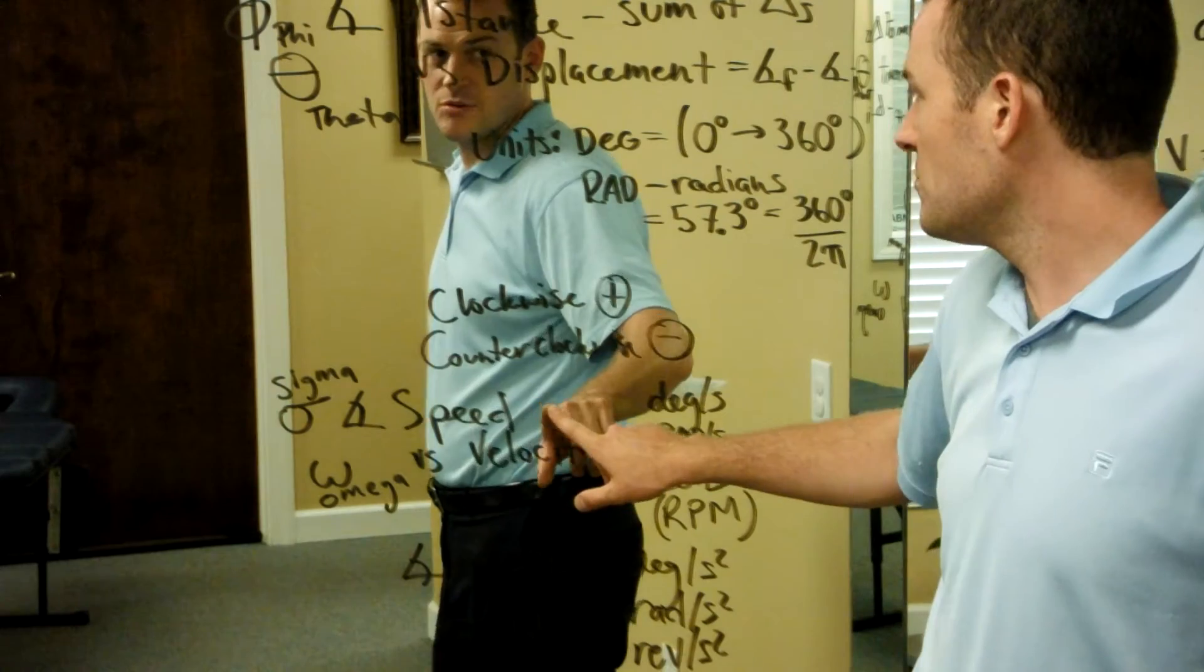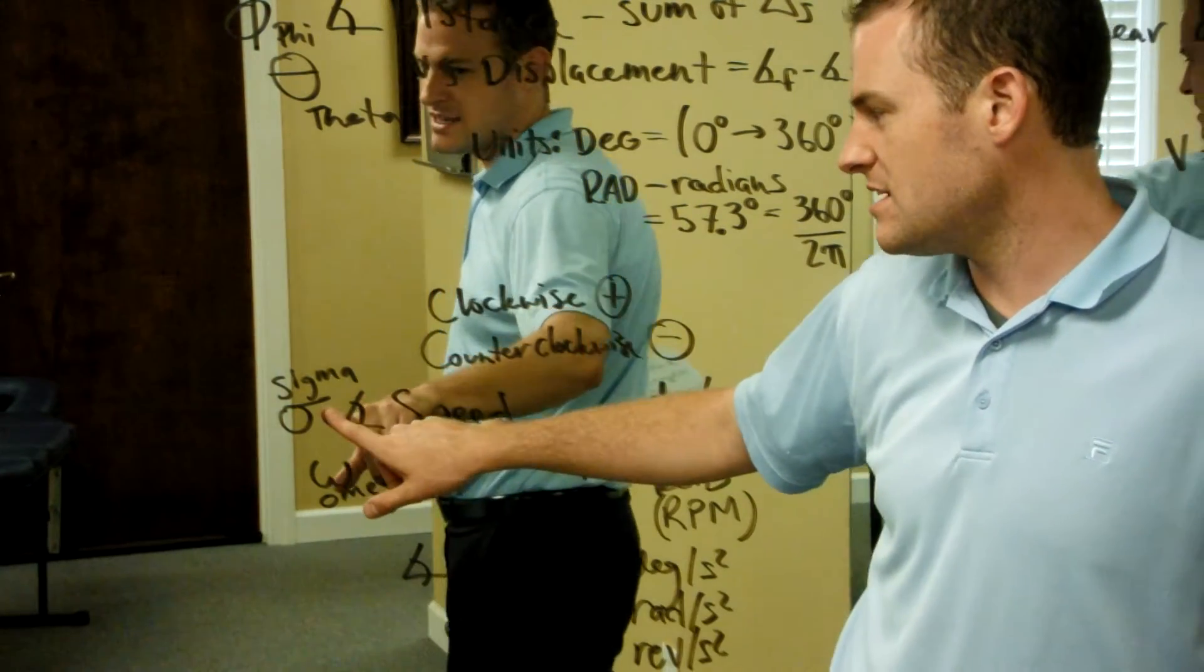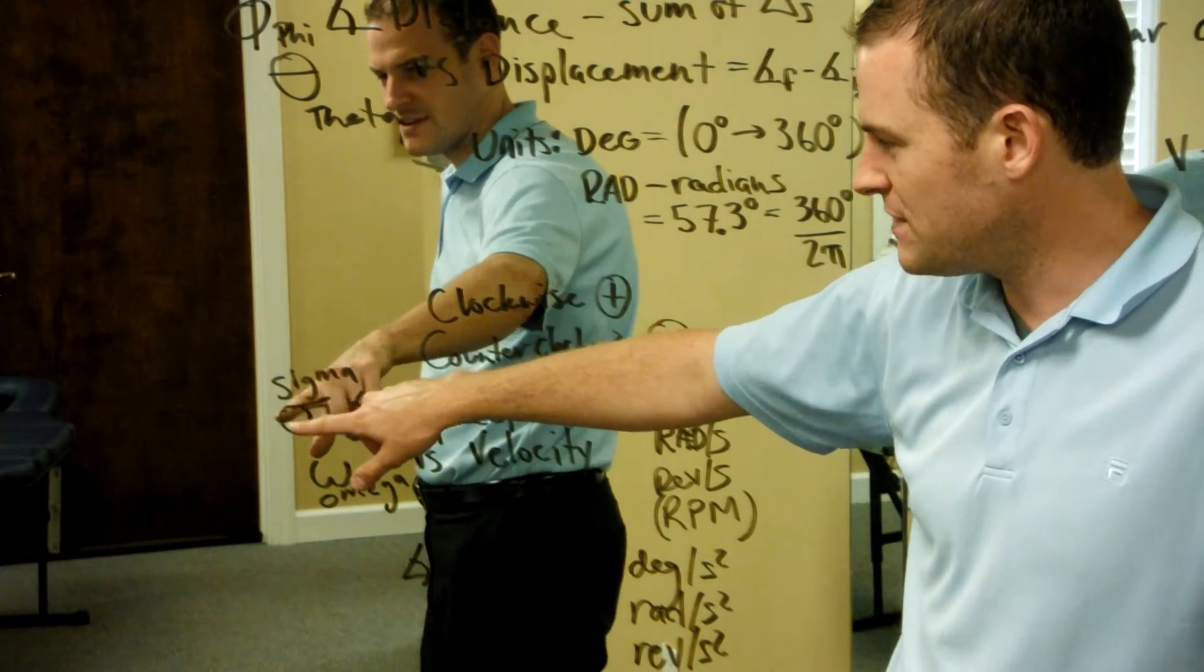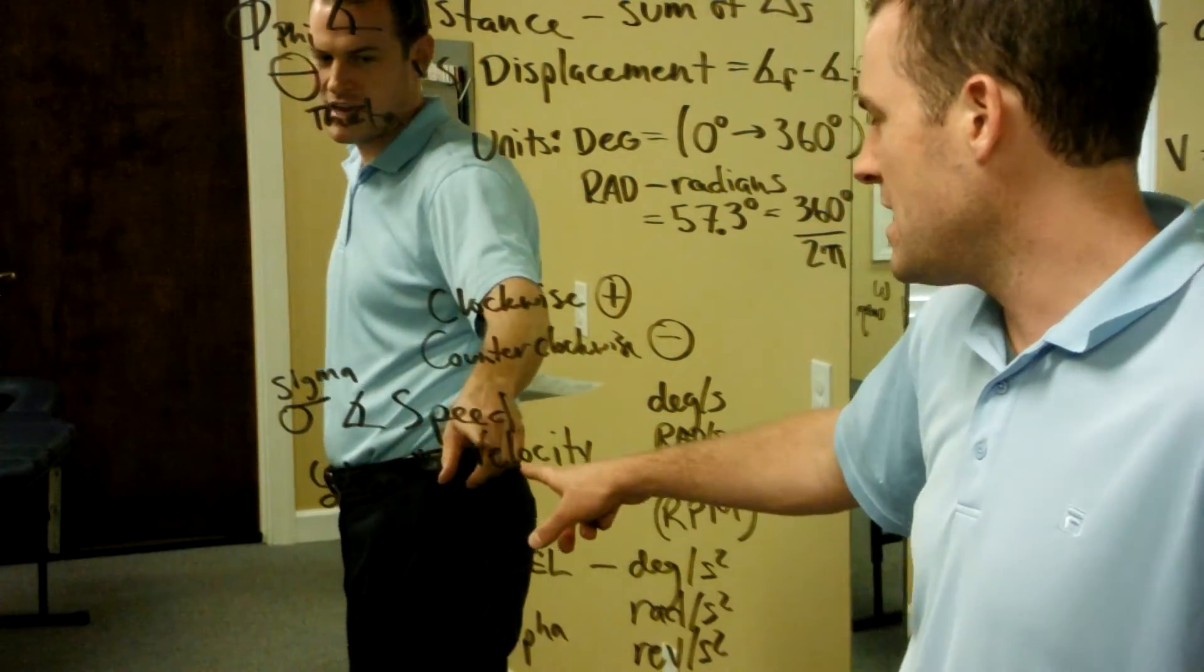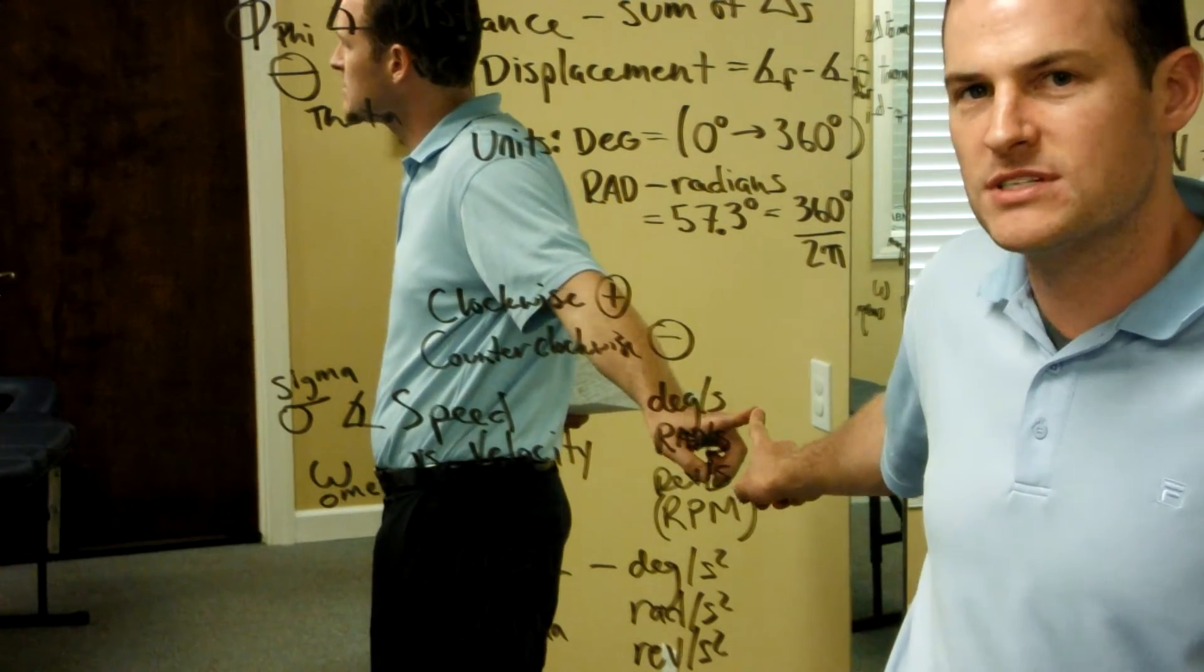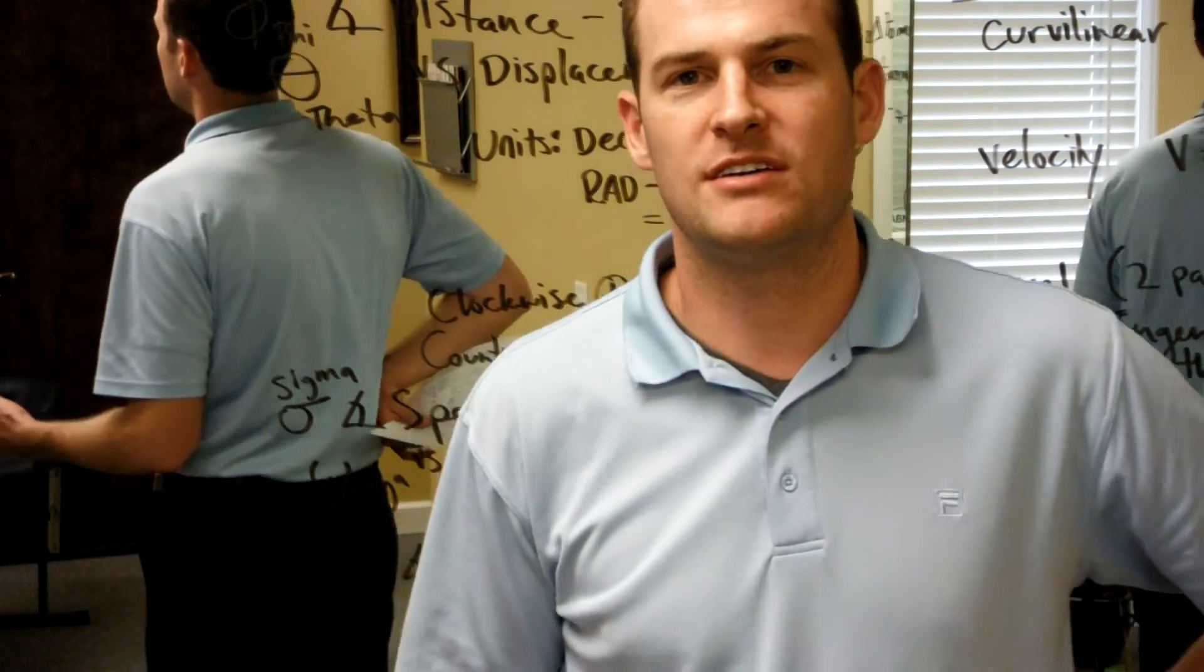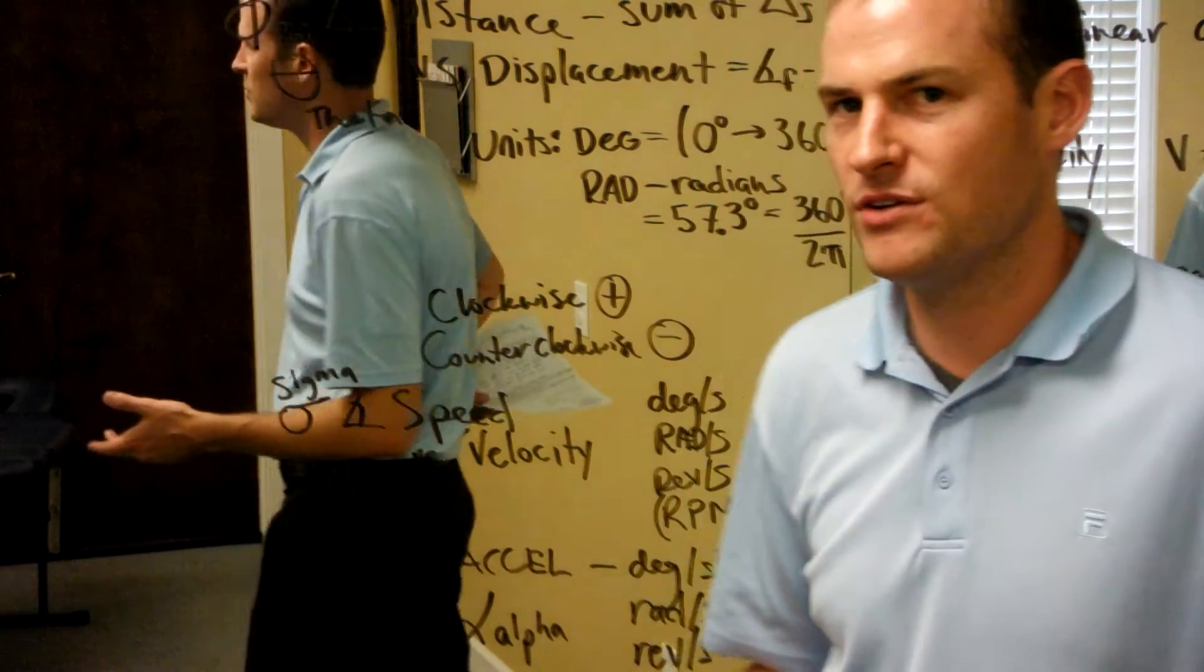On to the second level, we have speed and velocity. Angular speed is sigma. It looks like a circle, you know, a little stick figure head with a hat on it. And omega is the sign for angular velocity. Angular speed and velocity are calculated in degrees per second, radians per second, or revolutions per second, more commonly converted into revolutions per minute or RPM, a term many of you are familiar with.